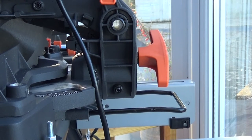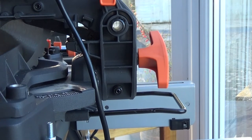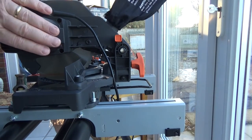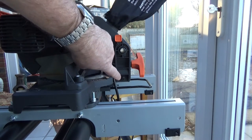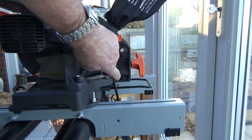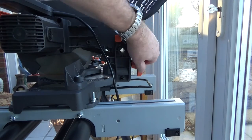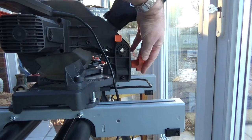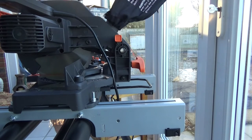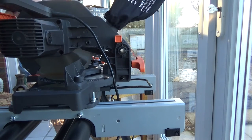In order to make this adjustment we've got to come across to the right hand side of the machine where the motor is. Down there you'll see we've got a little locking nut and a set screw, and that's what we've got to adjust. But before we adjust it we've got to slacken off this bevel clamp so that we've got free movement of the saw.